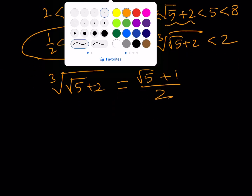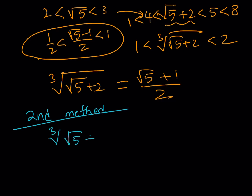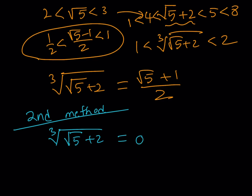Here's the second solution method — another interesting approach. Please comment at the end which method you like better and why. Since the expression inside involves √5, we assume the cube root is in the form A√5 + B, where A and B are rational numbers.